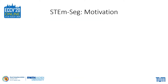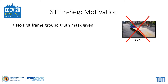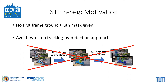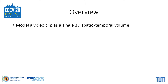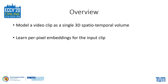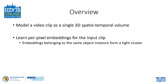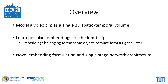For StemSeg, however, we adopt a different approach. We assume that no first-frame ground truth mask is available. Furthermore, we avoid the two-step tracking-by-detection paradigm and instead jointly associate pixels across space and time using an end-to-end trainable single-stage network. To do this, we model a video clip as a single 3D volume and learn per-pixel embeddings for the entire clip. Our network is trained such that embeddings belonging to the same object form a tight cluster in the embedding space. To this end, we employ a novel embedding formulation and a novel 3D convolution-based network architecture.